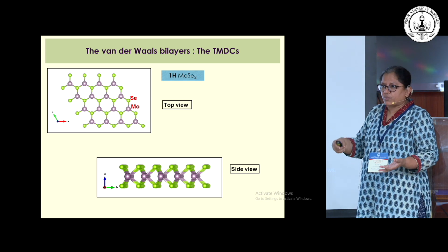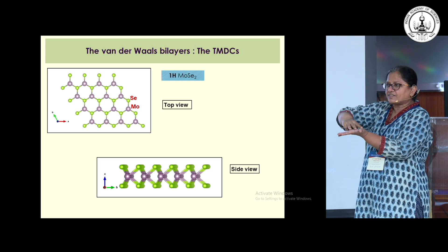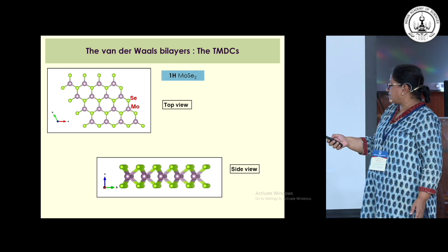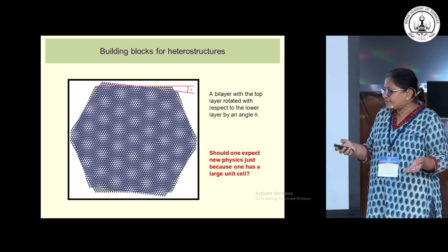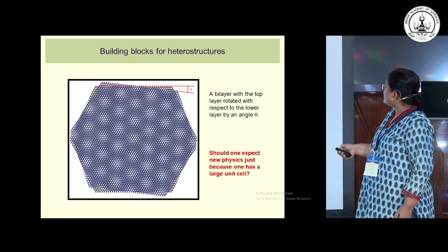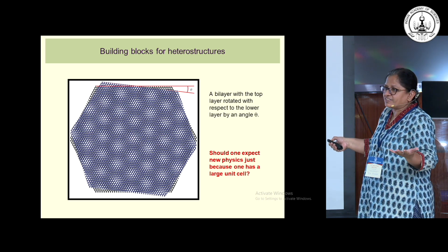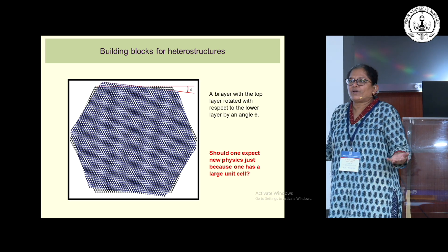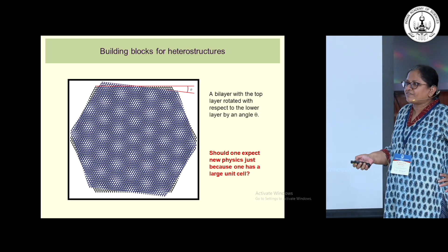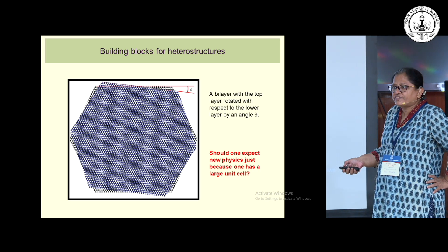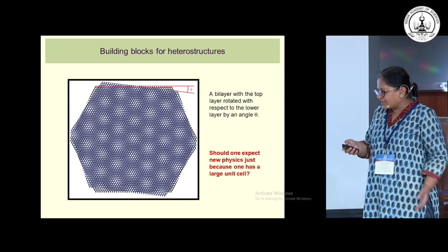If I can pull out one layer at a time, I can make my own Lego structures and construct these heterostructures. Let's stick to two layers for the moment. You have the first layer, and you rotate the second layer with respect to the bottom layer by an angle theta. The question everyone in the community is asking is: why are we seeing very new physics in these materials when the coupling between them is so weak?